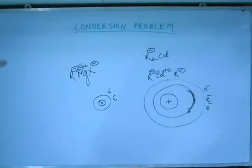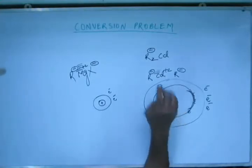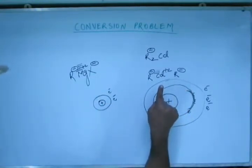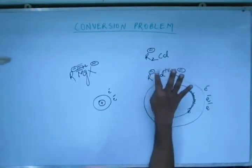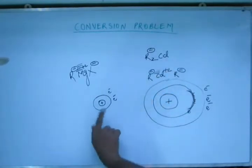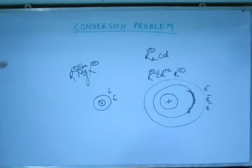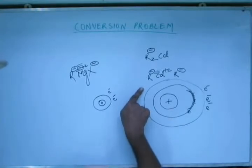Because R⁻ is more tightly held in dialkyl cadmium due to stronger electrostatic attraction from the cadmium nucleus, those electrons are less free to be donated into another atom's orbital. This is the reason dialkyl cadmium is less reactive than Grignard reagent — reactions are essentially transfers of electrons from one orbital to another, and if electrons are very tightly held, they have less tendency to be transferred.